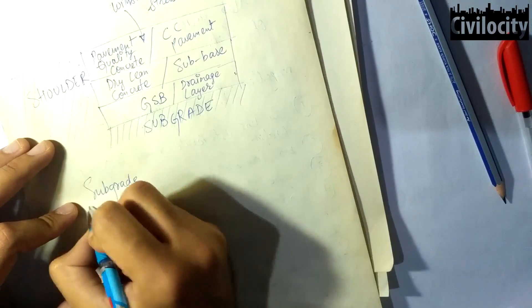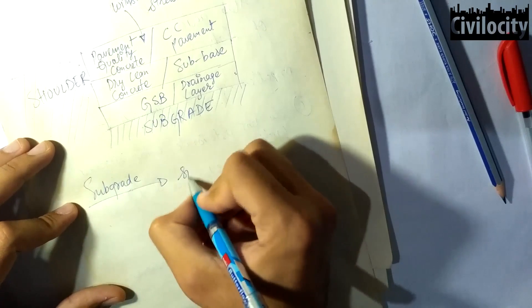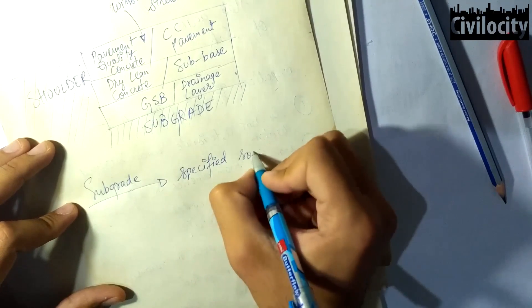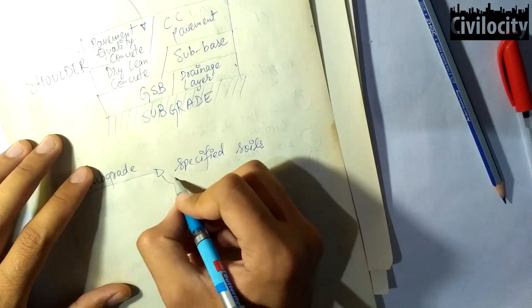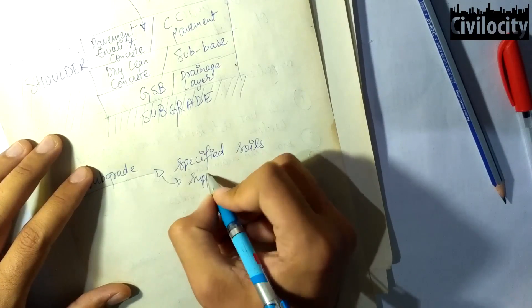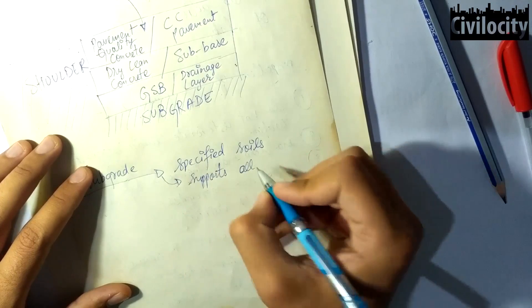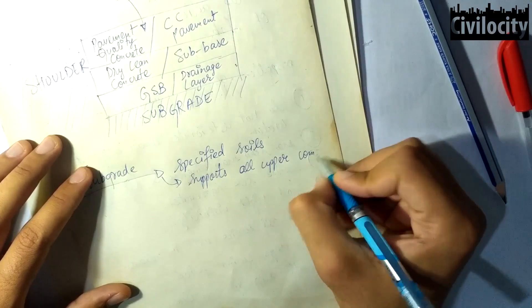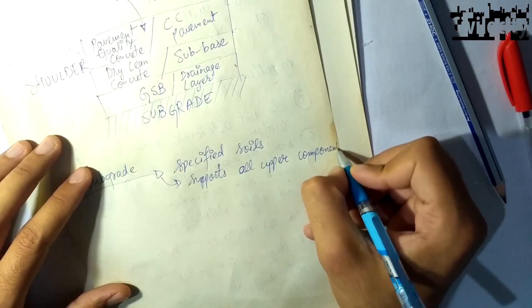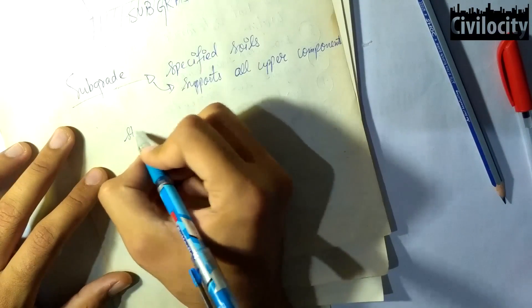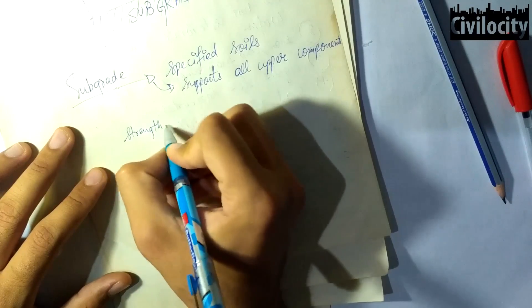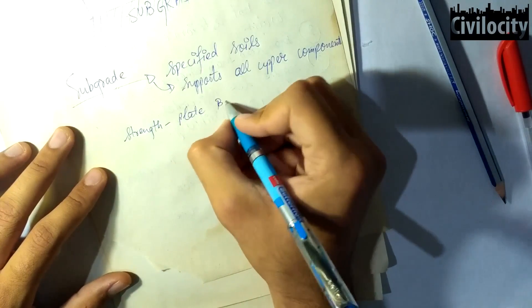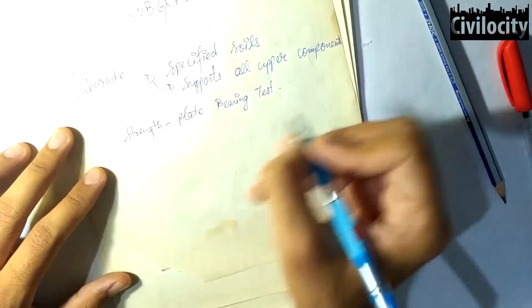Now let's talk about the subgrade of rigid pavements. Subgrade is made up of selected soils of specified requirements and well compacted in layers to the specified density and thickness. Since it is the lowest layer it ultimately supports all the components and the traffic load. There is no need to consider allowable value of vertical strain on the subgrade because the compressive stress transmitted by the rigid pavement to the top of the subgrade will be very low.